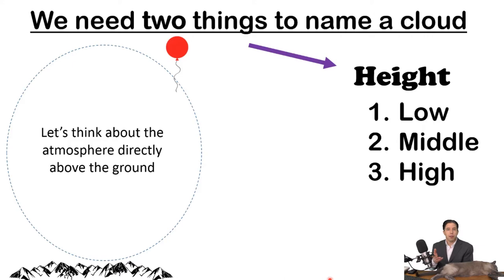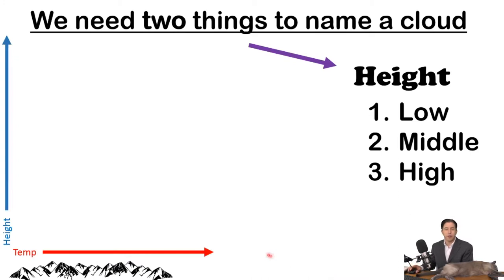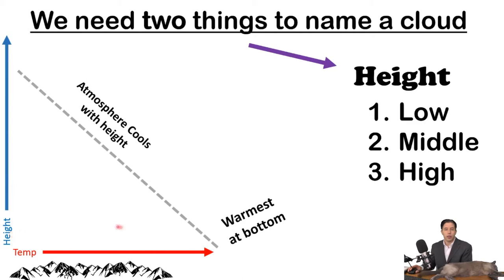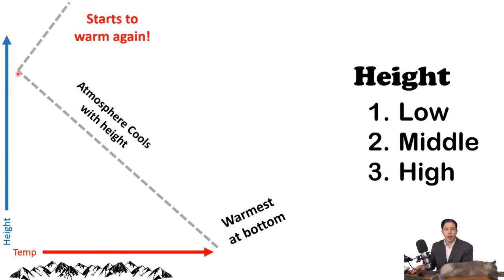Imagine you took those temperatures and put them on a graph. The x-axis is temperature — warmer to the right — and height is on the y-axis. If I start to float up in a balloon, I'd notice it's warmest near the surface, and it gets colder and colder as I go up. Until I get way up here, maybe 10 kilometers or so, and then something weird happens — it starts to get warmer again.